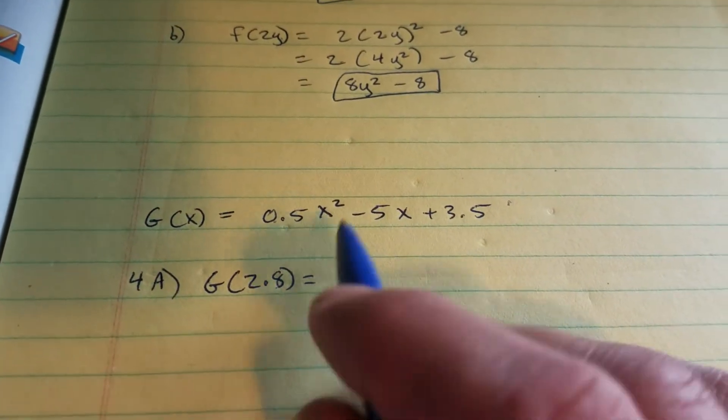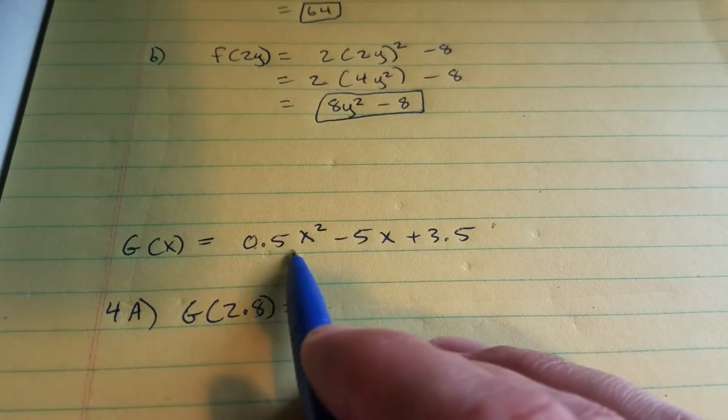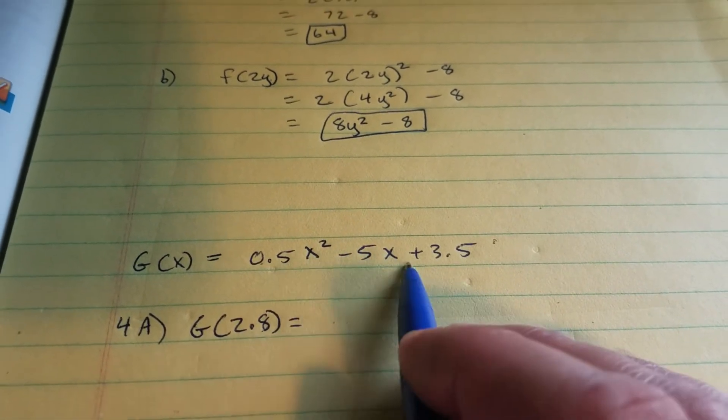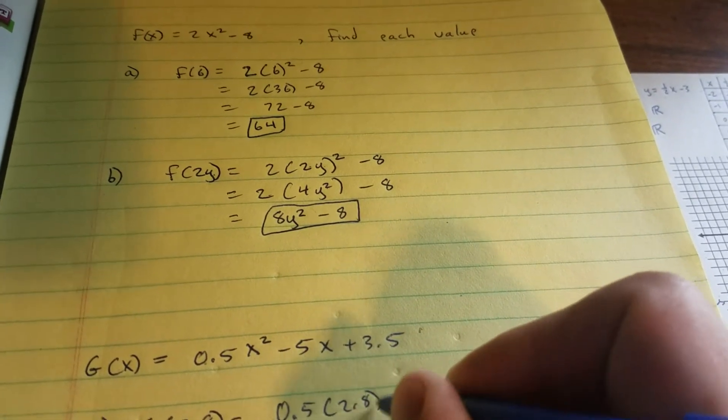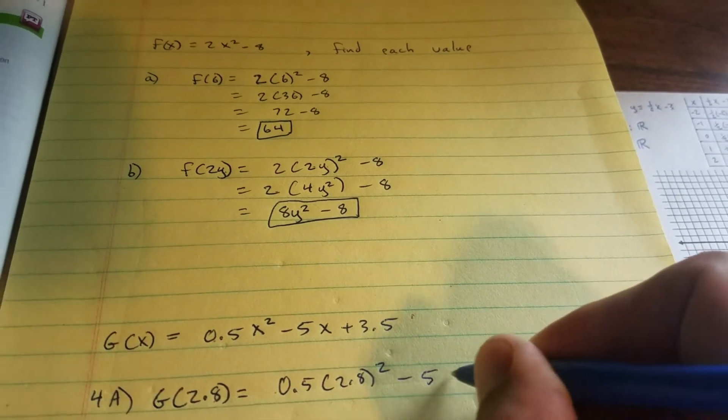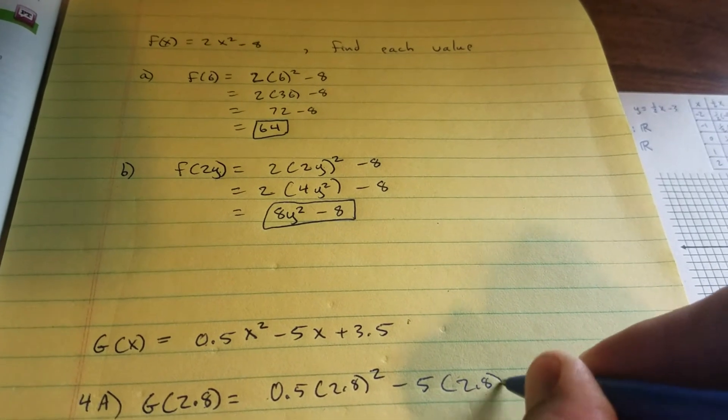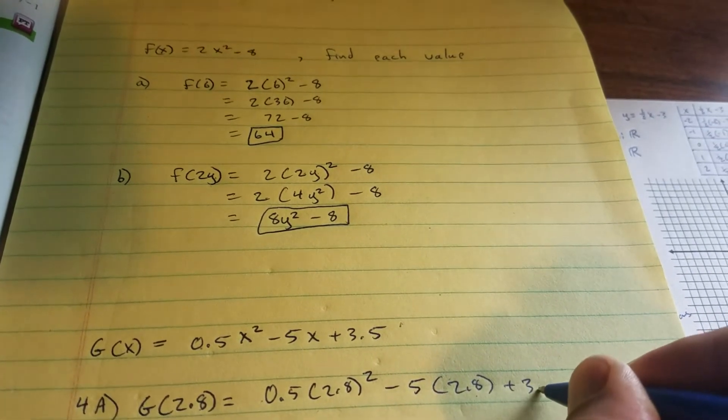Here's 4a, G of 2.8. You're going to put this in parentheses where the x is both times. So this is 0.5 times 2.8 squared minus 5 times 2.8 plus 3.5.